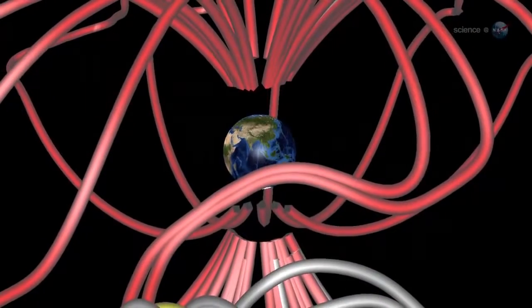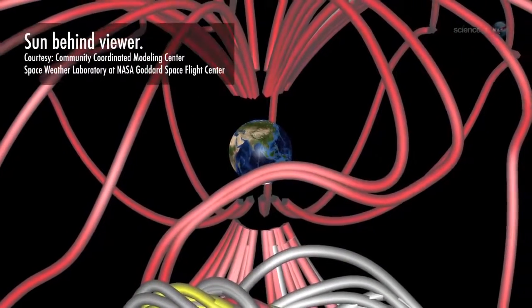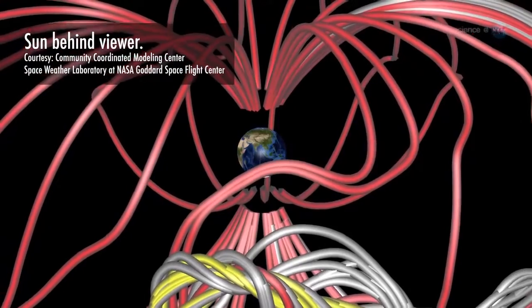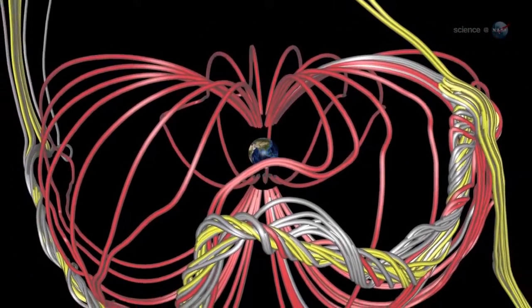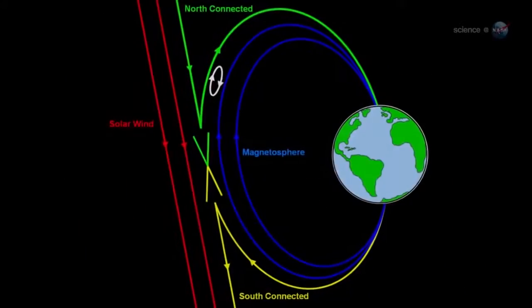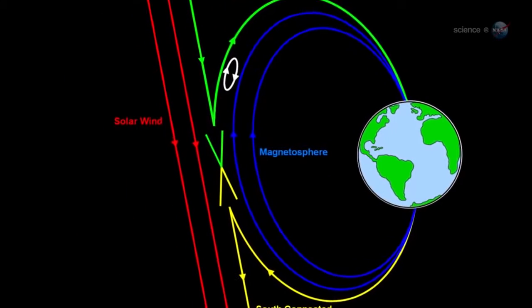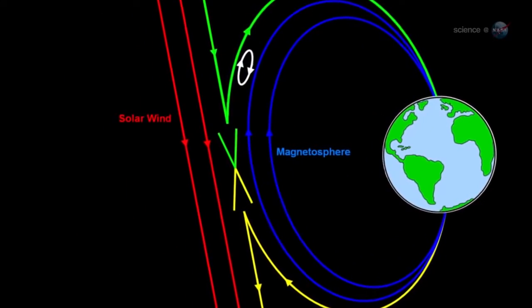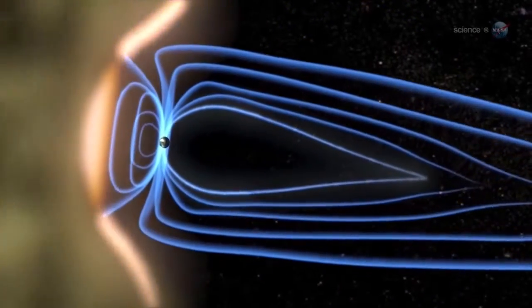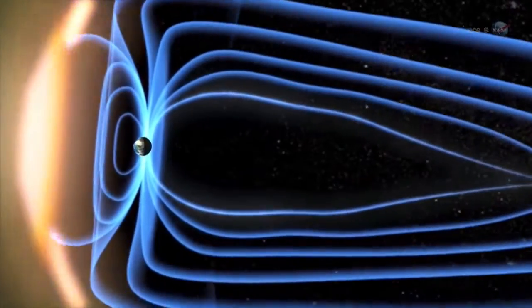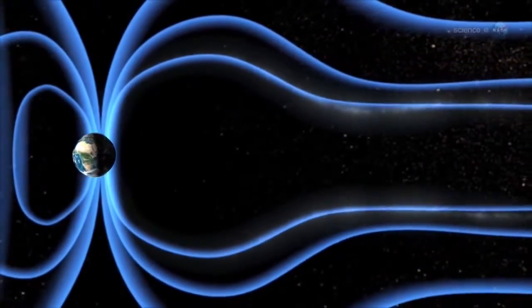Actually, there are signposts, and Scudder has found them. Portals form via the process of magnetic reconnection. Mingling lines of magnetic force from the Sun and Earth criss-cross and join to create the openings. X-points are where the criss-cross takes place. The sudden joining of magnetic fields can propel jets of charged particles from the X-point, creating an electron diffusion region.